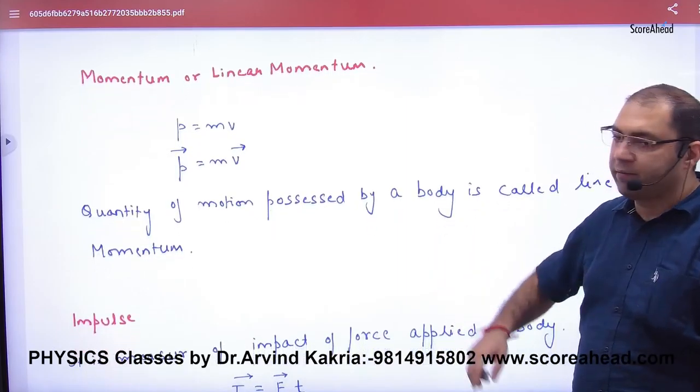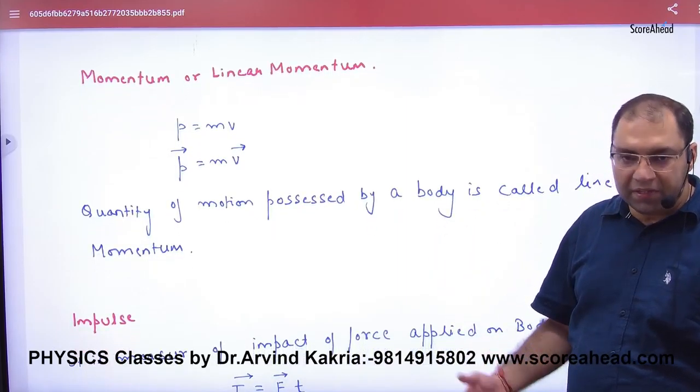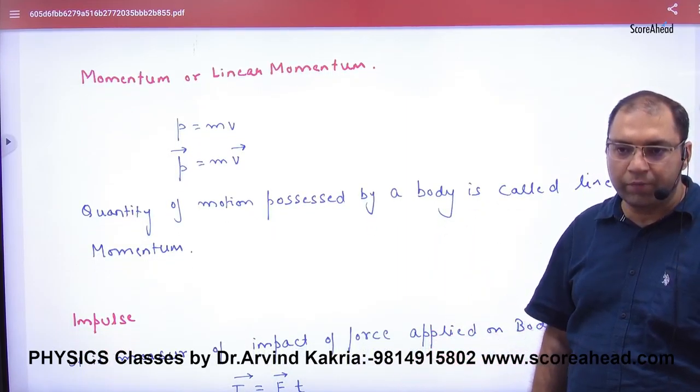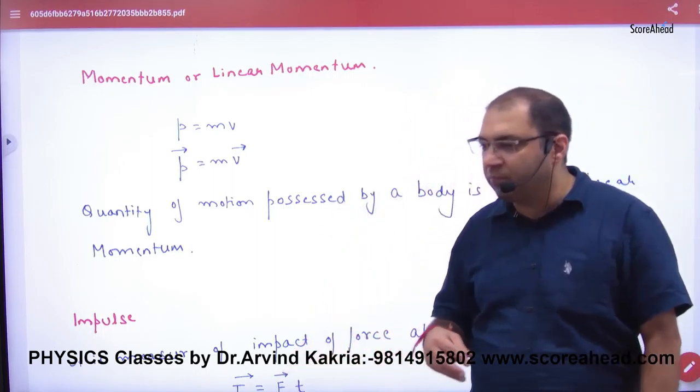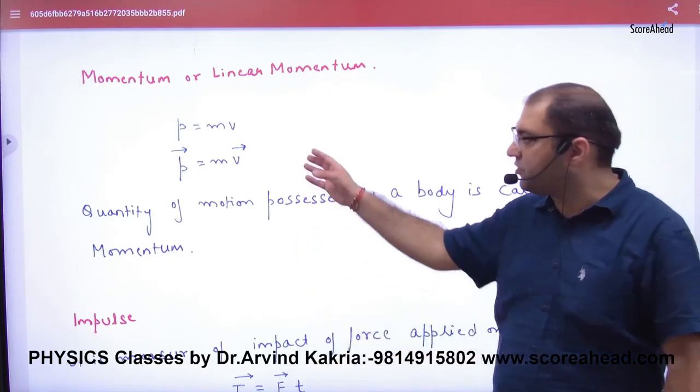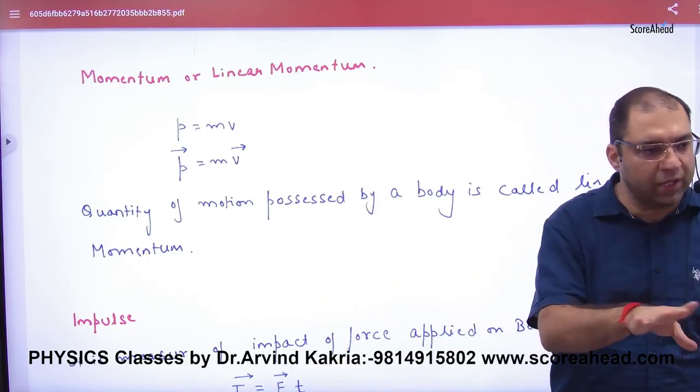Momentum or linear momentum, we represent as P, equals mass into velocity, and P is a vector. Linear momentum is a vector quantity and velocity is a vector quantity. So P vector equals m into V vector.